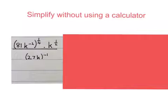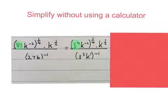Here's our last expression with fractions in the air that we have to simplify without the calculator. The first thing we do is we prime factorize the 81 and the 27 the 81 becomes 3 to the power of 4 and the 27 becomes 3 to the power of 3.